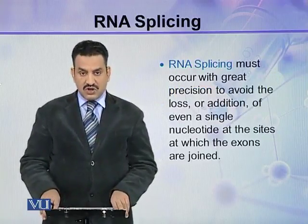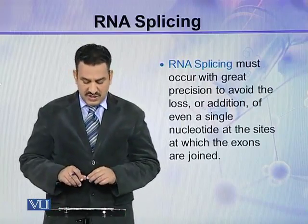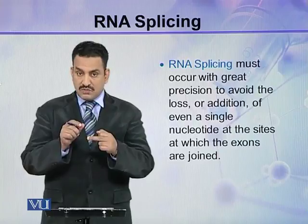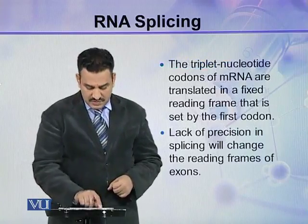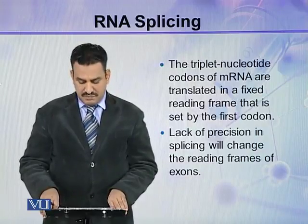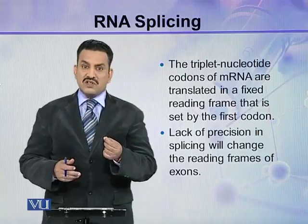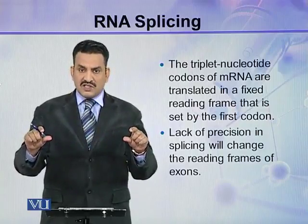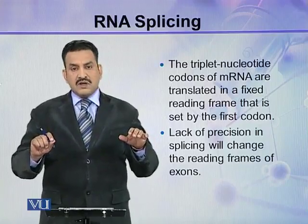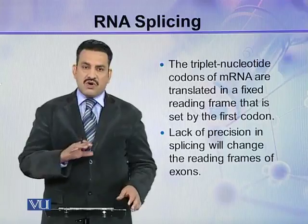RNA splicing must occur with great precision to avoid the loss or addition of even a single nucleotide at the sites where two exons join. The triplet nucleotide codons of mRNA are translated in a fixed reading frame that is set by the first codon. The removal of even a single nucleotide is critical because all codons are set in a reading frame starting from the first codon, and if one nucleotide is missed at any point, it will disturb the entire reading frame.